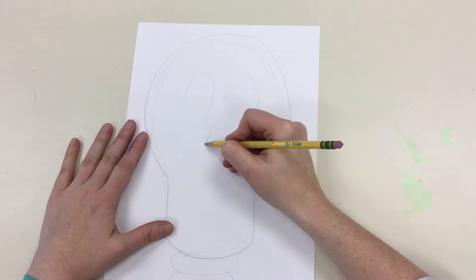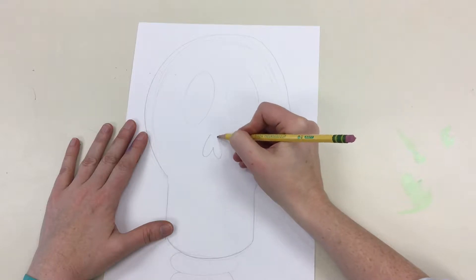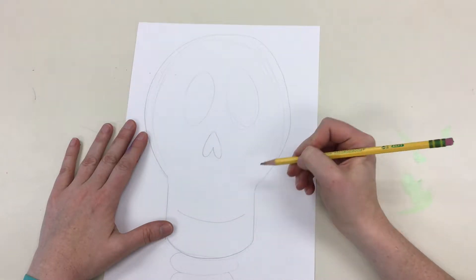To sketch out the eyes, we'll just make two ovals, an upside down heart for the nose, you can always flip your paper over and make a regular heart, and a smile for the mouth.